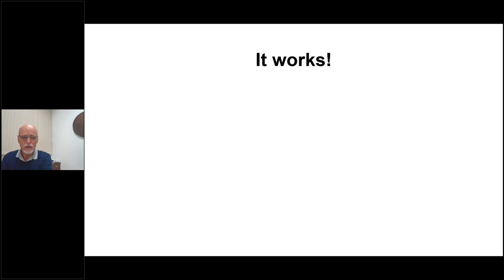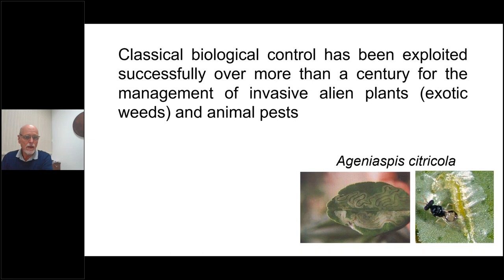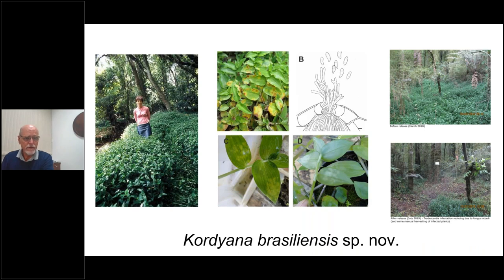Unfortunately it doesn't always work, but there are some spectacular stories. There are examples from agriculture such as the use of parasitoids to control the citrus leafminer in Brazil — a recent example of success. One ongoing example from New Zealand is a project we developed together with Landcare, aiming to mitigate the invasion of Tradescantia fluminensis, a major environmental weed.